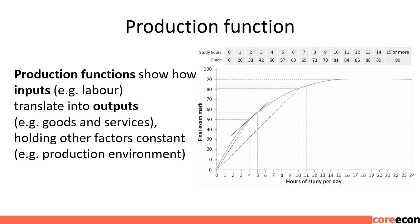If we study 0 hours, the grade will be 0. If we study 1 hour, the grade will be 20. 2 hours gives 33, and 3 hours gives 42. With 12 hours, the grade will be 86. The grade increases with more study hours until you get to 15 hours, where the grade reaches a maximum of 90. After which, if you study for 16 or 17 or more hours, the grade remains at 90. So there is no point in studying more than 15 hours.